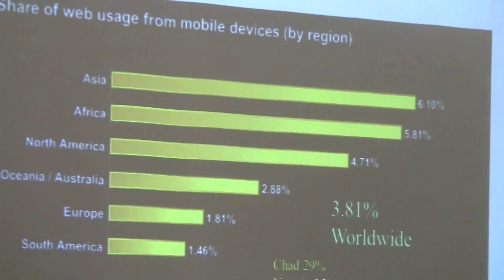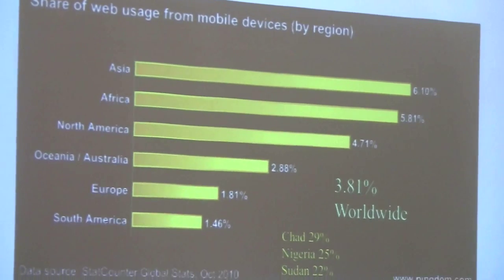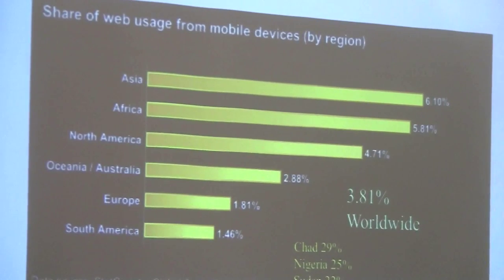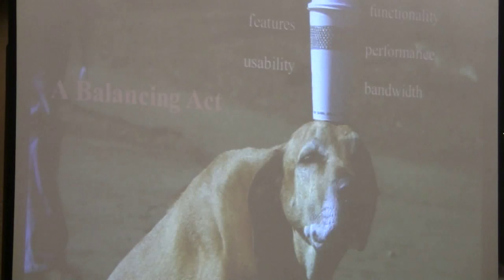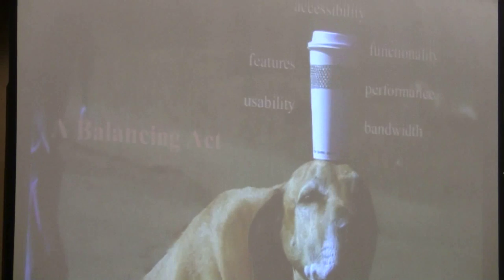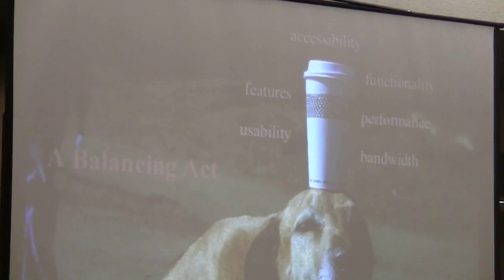All over the world, the smallest villages have mobile devices. If you look at web usage worldwide, you can see Asia uses mobile devices more than anyone else, as does Africa and the developing world — it's a huge share of total web usage by region. When developing for mobile devices, take a tip from Ken Anderson and balance usability, features, accessibility, functionality, performance, and bandwidth.